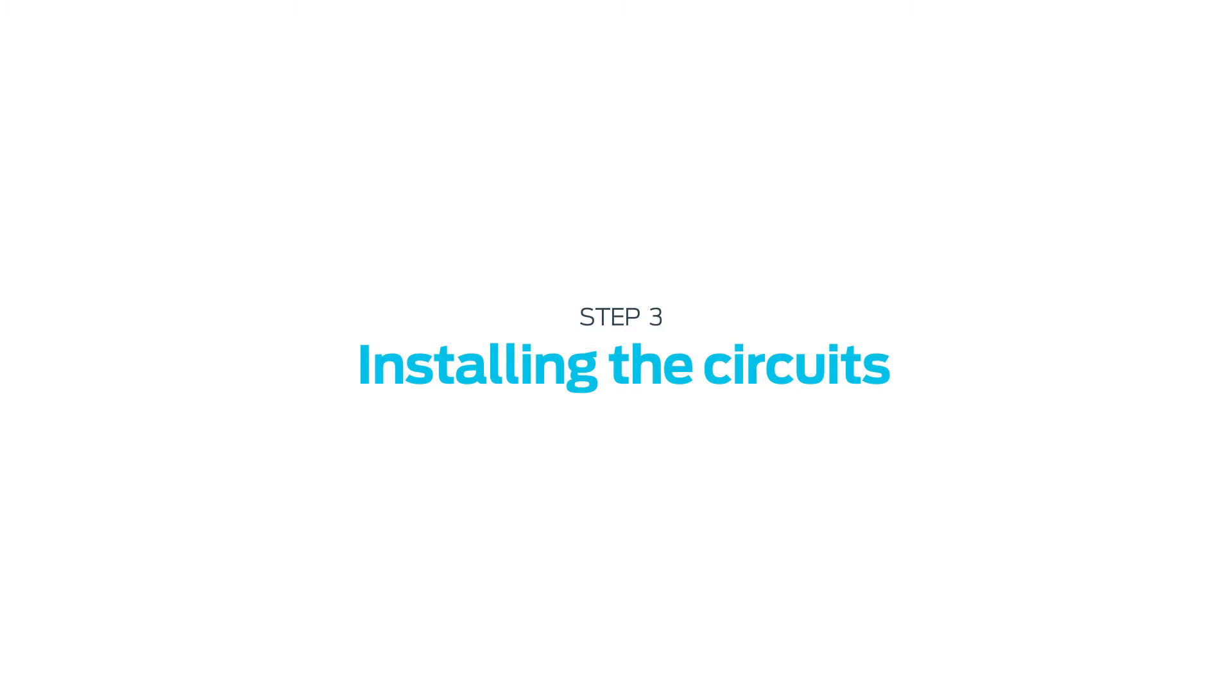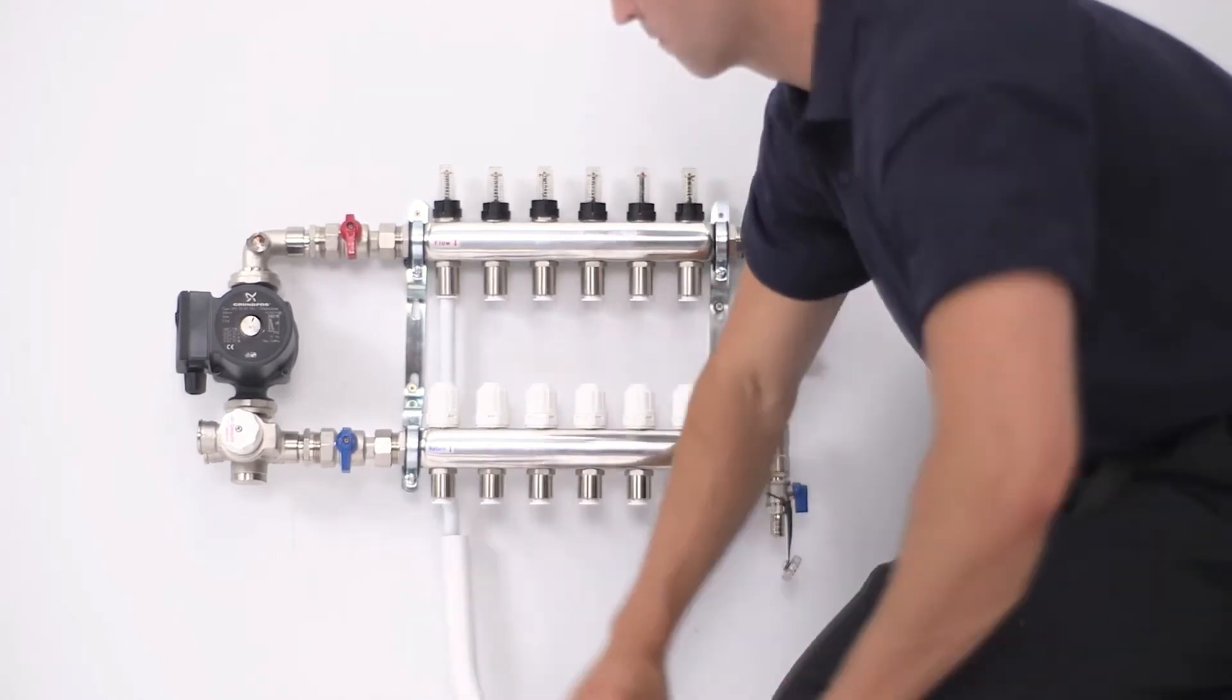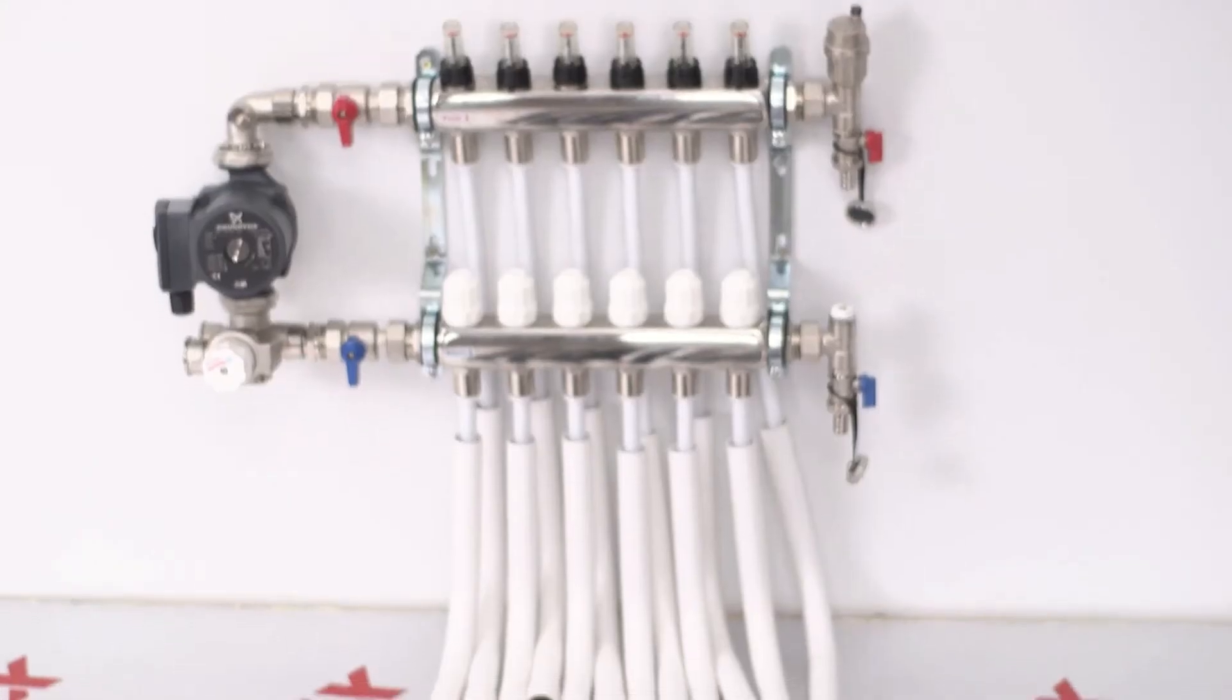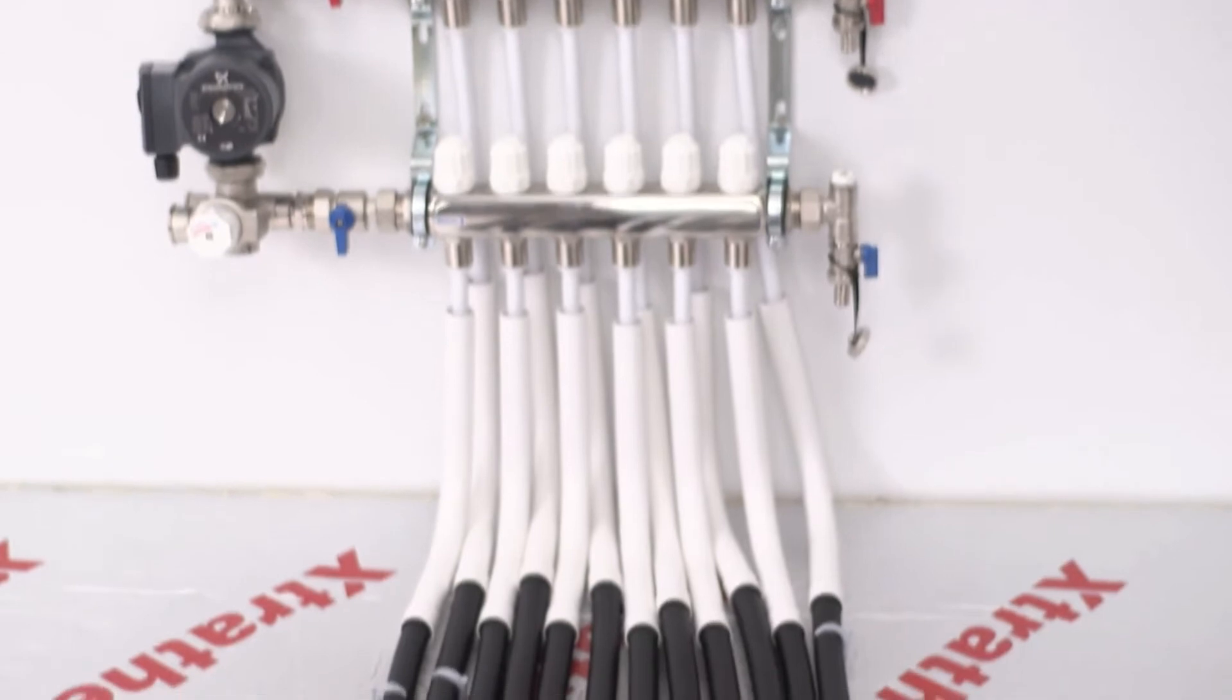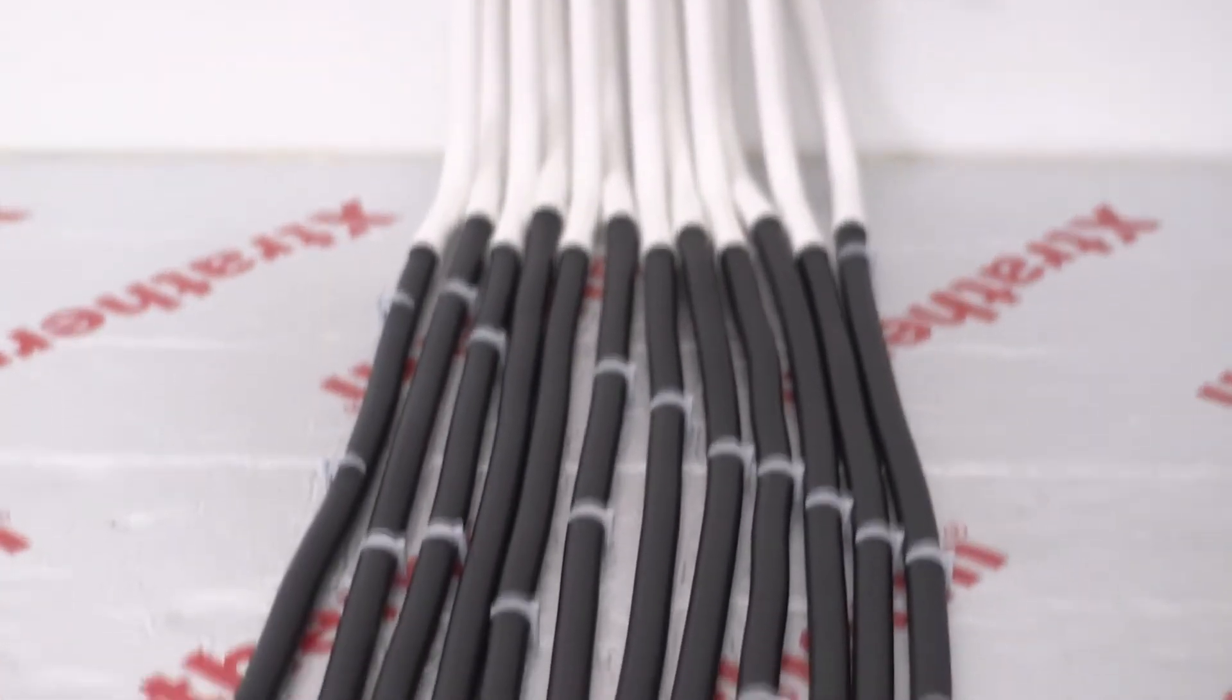Installing the circuit. We have shown in the previous video demonstration how to connect to the manifold and run the pipe work to the room you're working in. After running the pipe from the manifold or one room pack to the beginning of the circuit, we can start to lay the pipe.